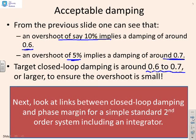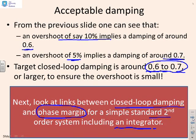What we want to do next is look at the links between closed-loop damping and phase margin. We want to know what phase margin corresponds to a damping ratio of 0.6 to 0.7, which will give us an acceptable overshoot. We'll look at a simple standard second-order system which includes an integrator, ensuring zero steady-state offset.